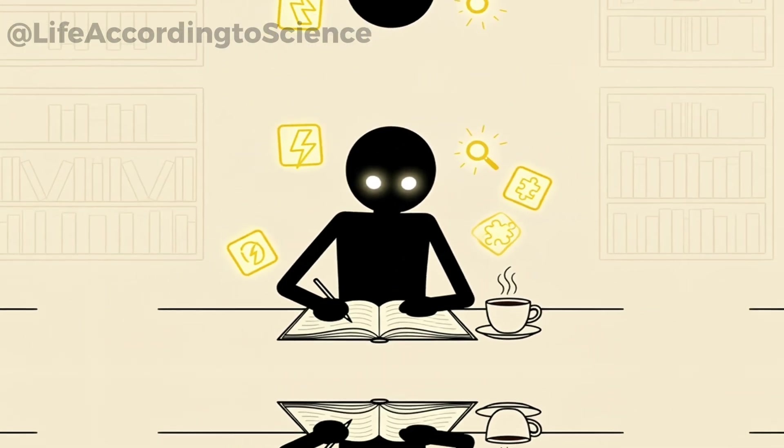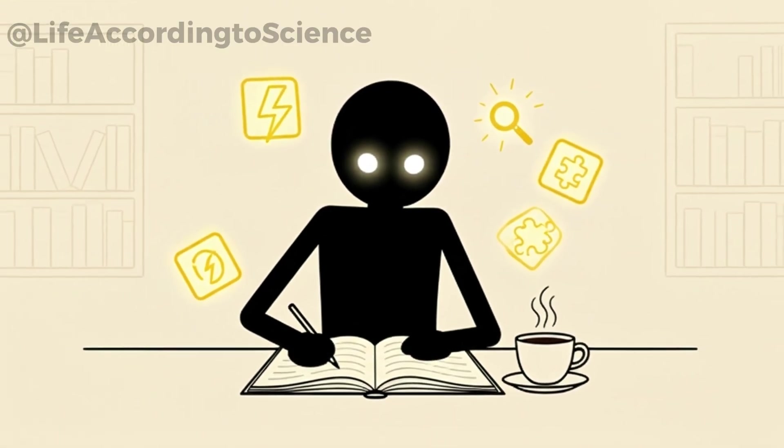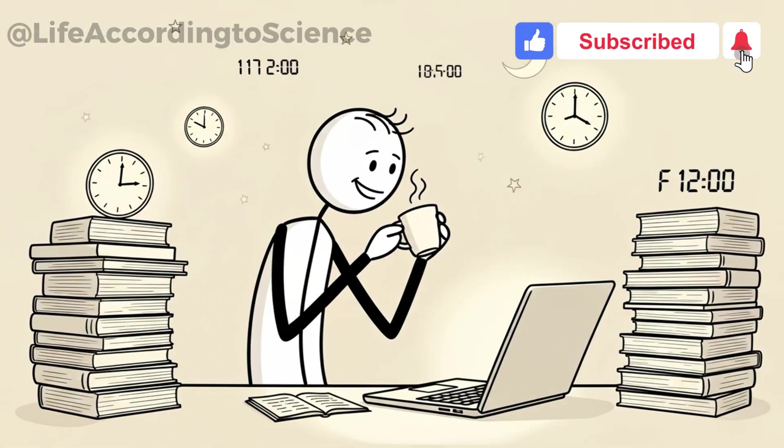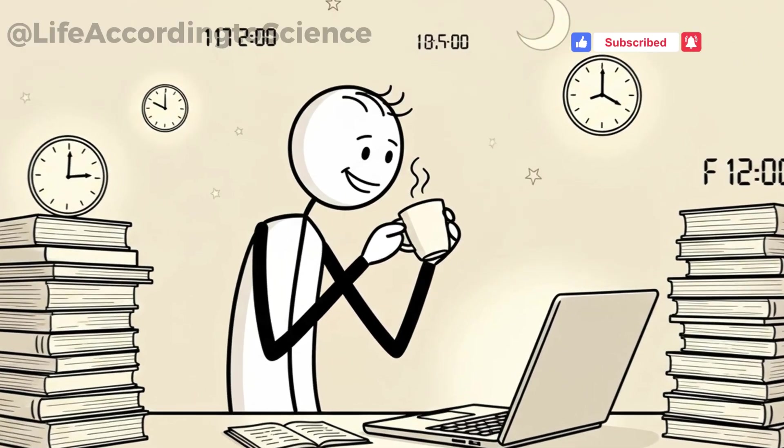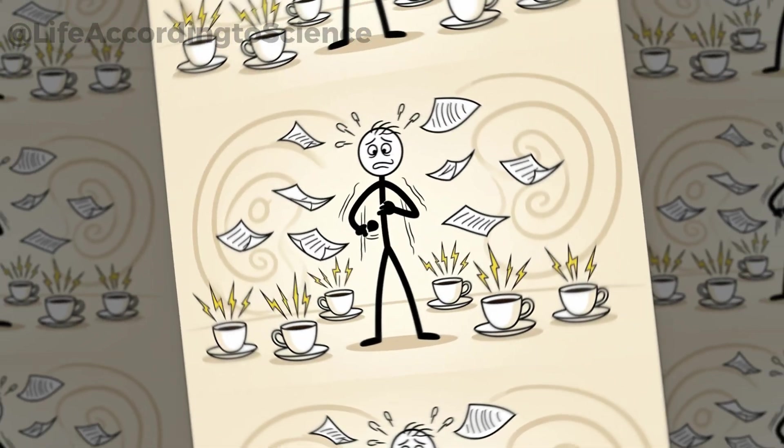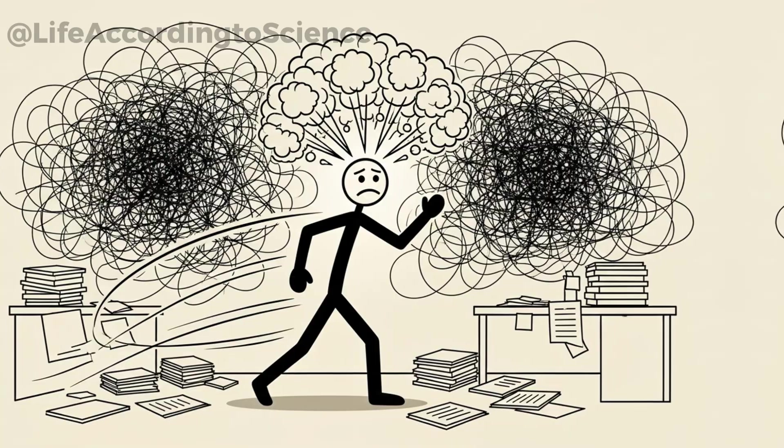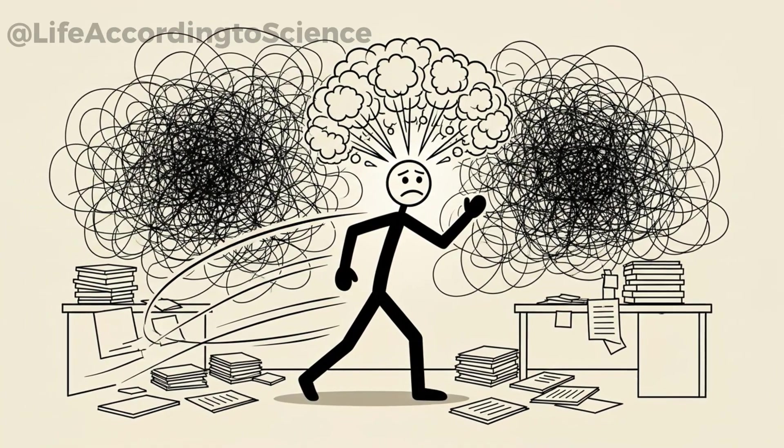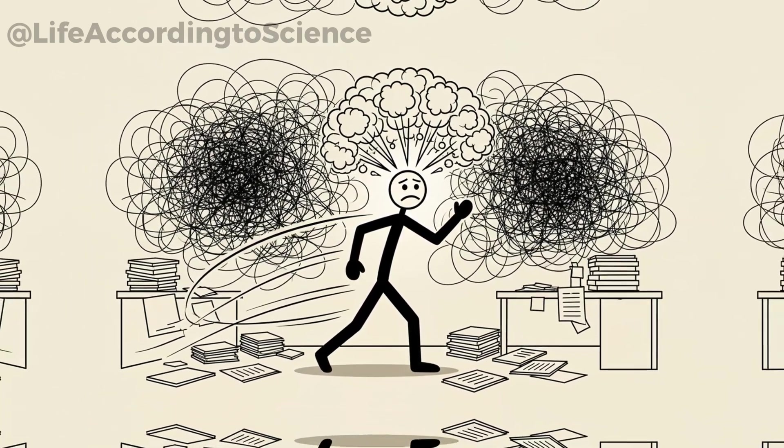Most people drink coffee for sharper focus. In the short-term, caffeine improves reaction times, boosts attention, and makes problem-solving feel easier. It's why so many people rely on it for studying or working late. But here's the paradox. Too much caffeine can lead to overstimulation. Your brain becomes hyper-alert, making it harder to concentrate on one thing. Instead, you jump from task to task, chasing thoughts that scatter faster than you can catch them.